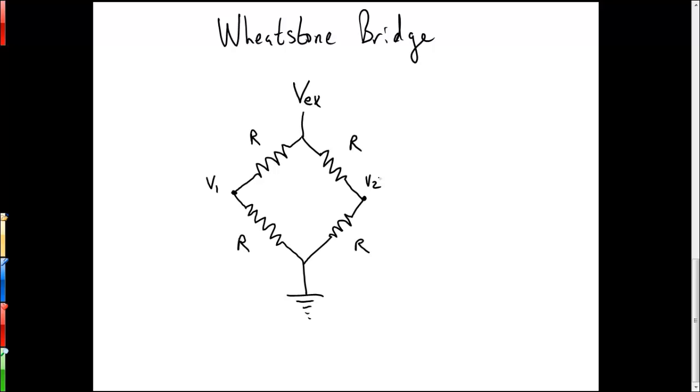On the other hand, if we make one of these resistors a variable resistor, for example, if we make this a photodiode or a photoresistor or a thermistor or a strain gauge, then this resistor can vary, and when it varies, the voltage in V2 will vary, and we'll be able to read some change in voltage, delta V, across these two nodes here.